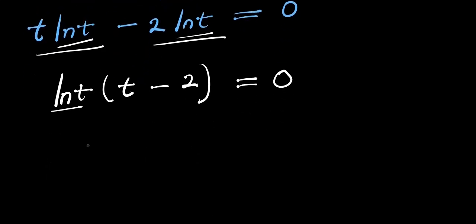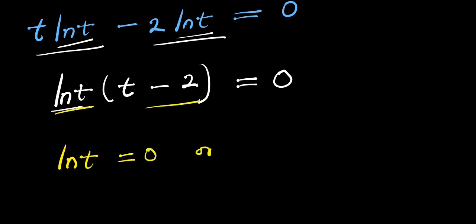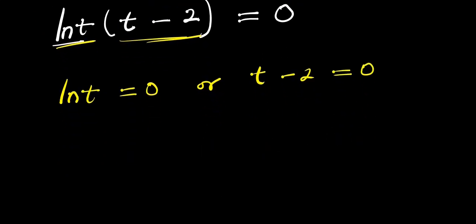Now we equate each factor to zero. We have the first one: ln t equals zero, or the second one: t minus 2 equals zero. For each case, we need to solve for t.